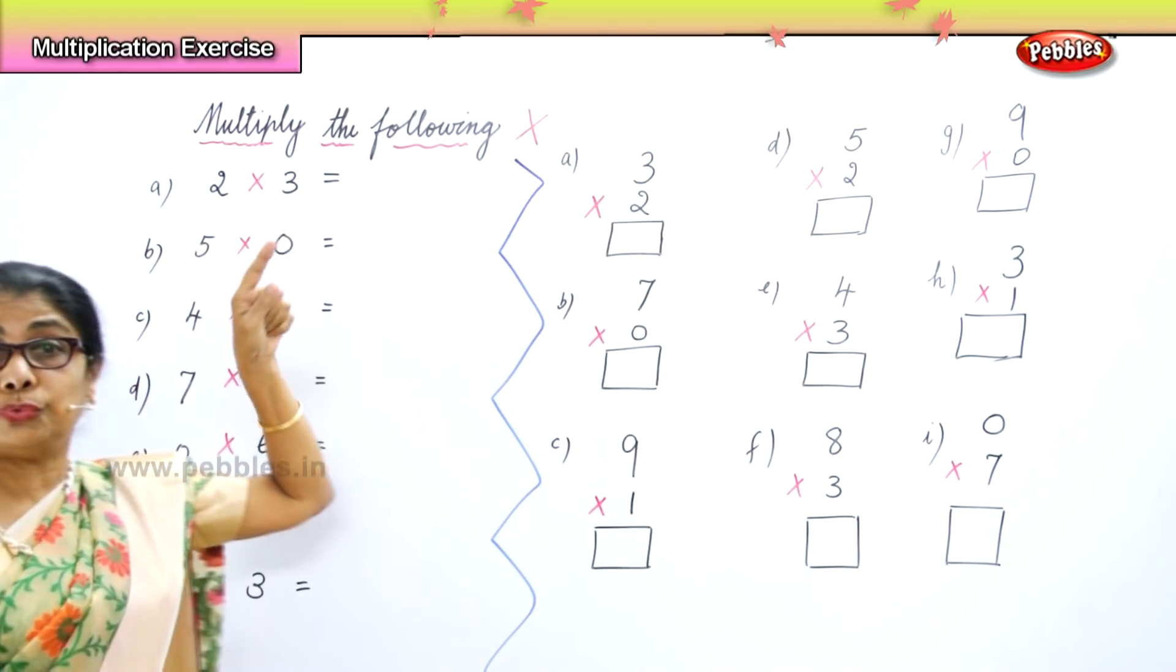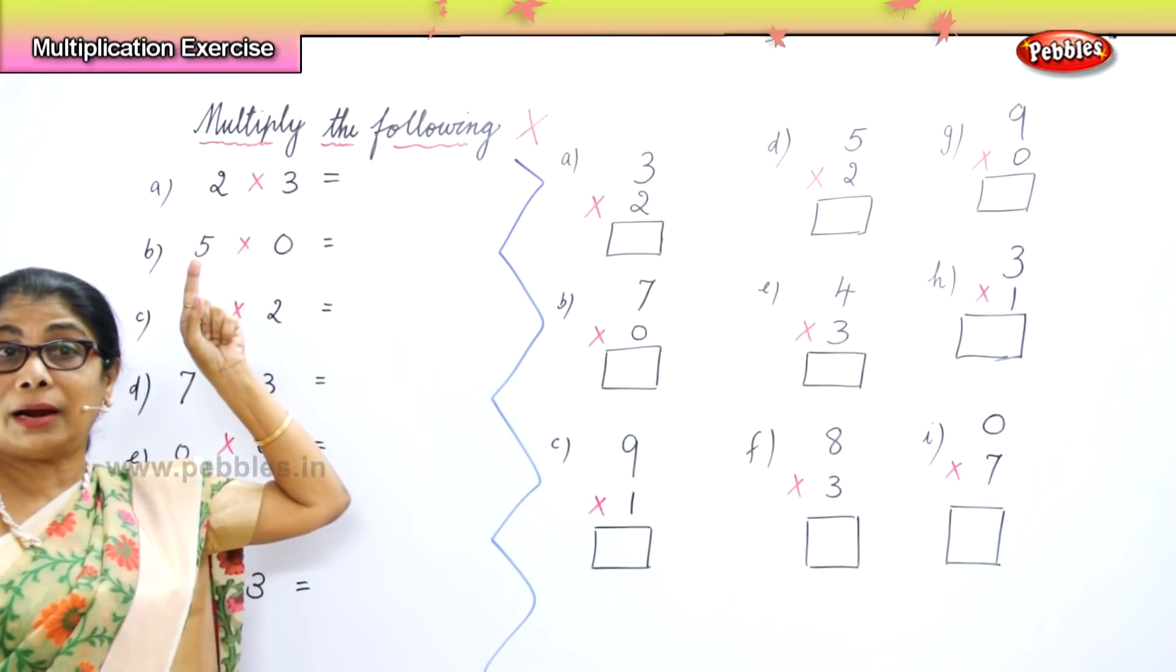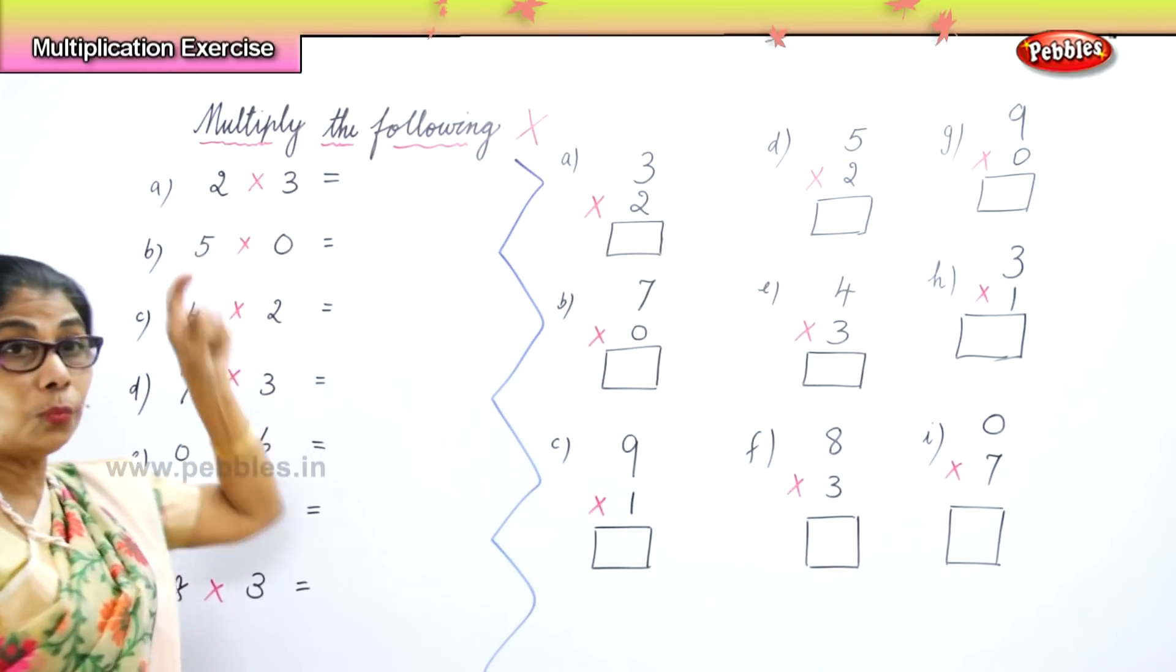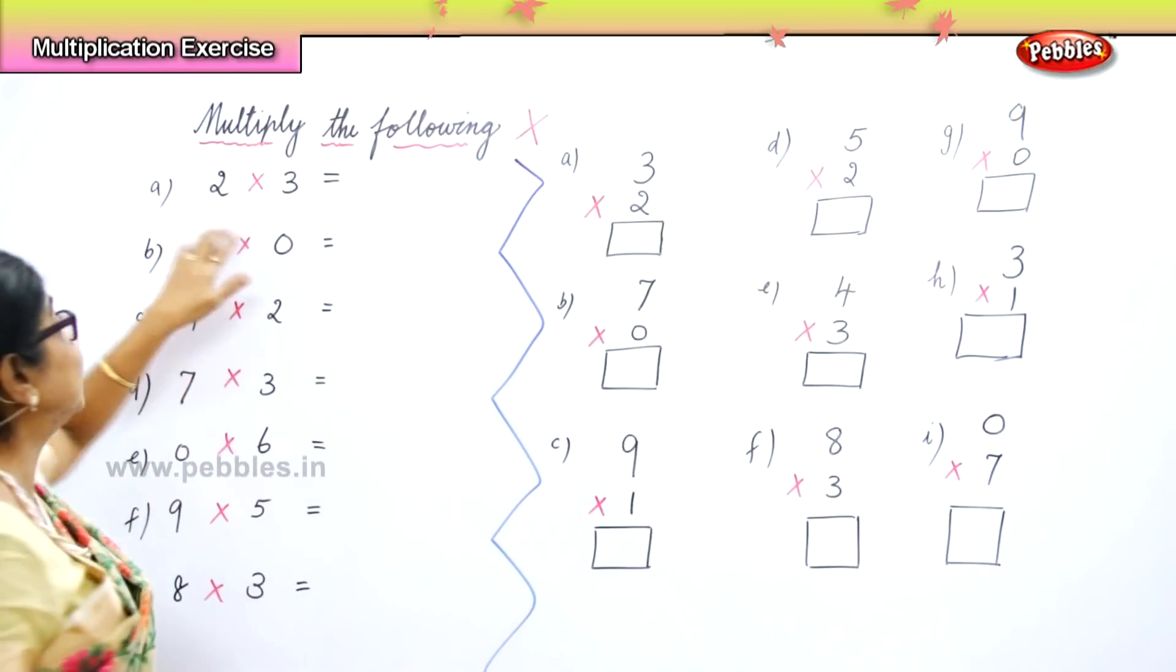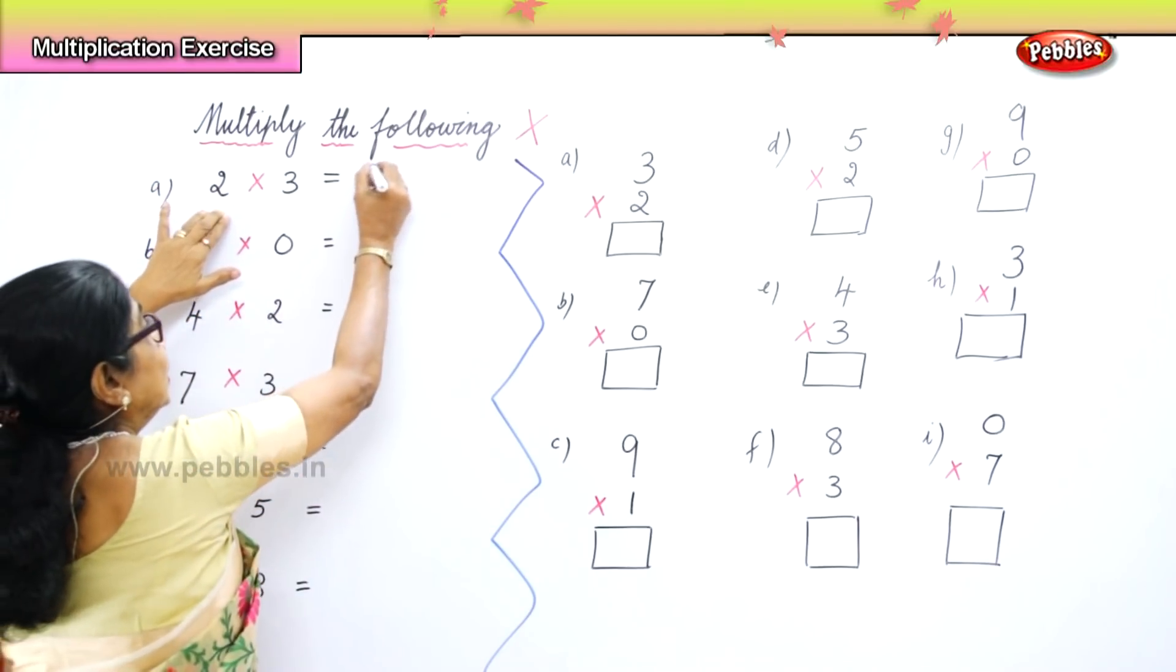3 into 2. Three twos are, that is, three ones, three two, three. Three twos, three two times. Three twos are six.